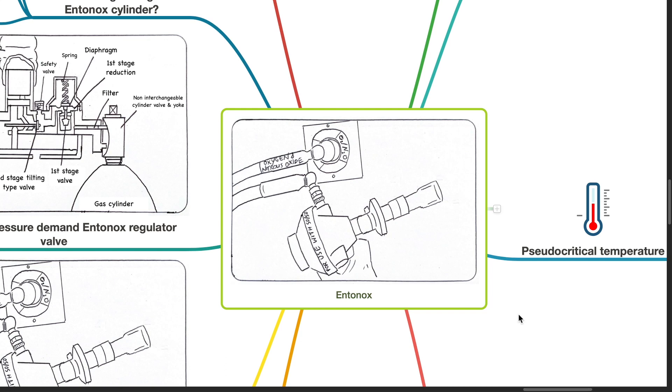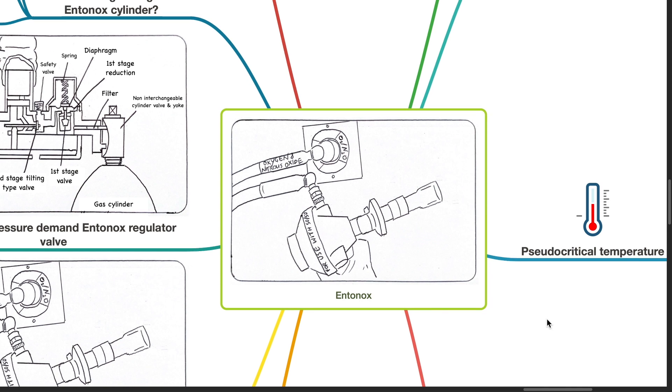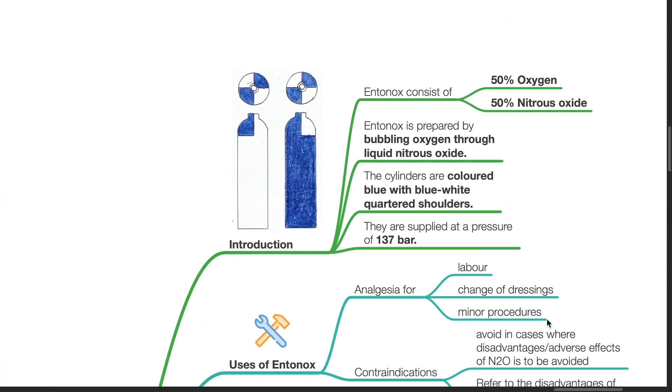Good morning, Dr. Phil here. Today we will be discussing Entonox. Introduction: Entonox consists of 50% oxygen and 50% nitrous oxide.